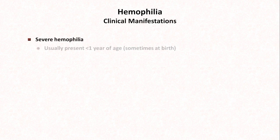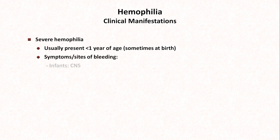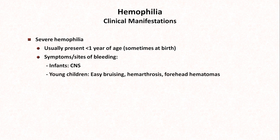Severe hemophilia usually presents before the age of one, sometimes at birth. Sites of bleeding vary a little with age. In infants, CNS bleeding is relatively common. In young children, as they are first learning to walk and become more active, they'll have easy bruising, forehead hematomas from minor head bumps, and hemarthrosis, which is bleeding into a joint. Repeat hemarthrosis in the same joint can lead to the development of a target joint, in which the same joint becomes increasingly likely to be a source of bleeding, leading to chronic pain and disability called hemophilic arthropathy.